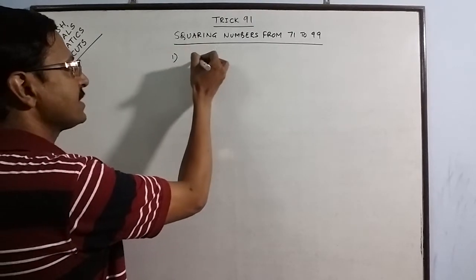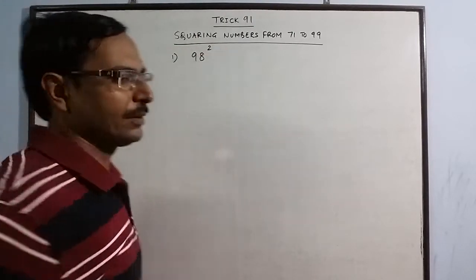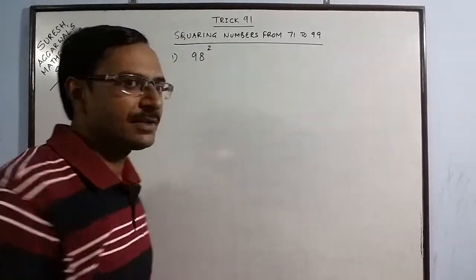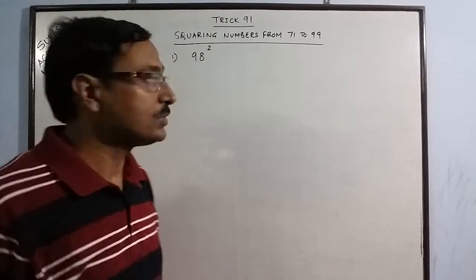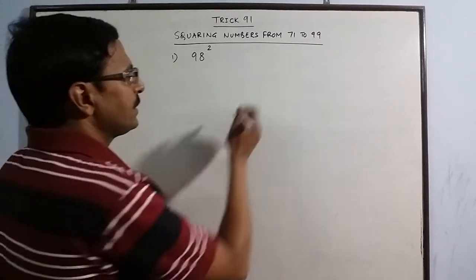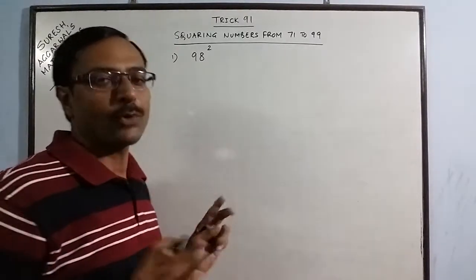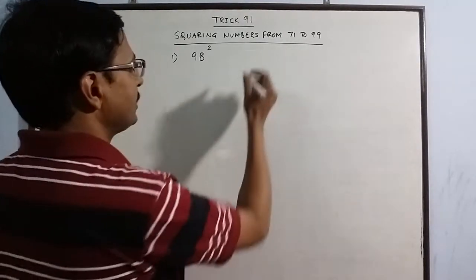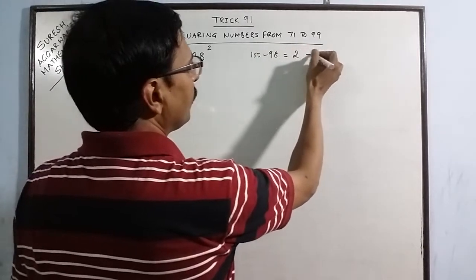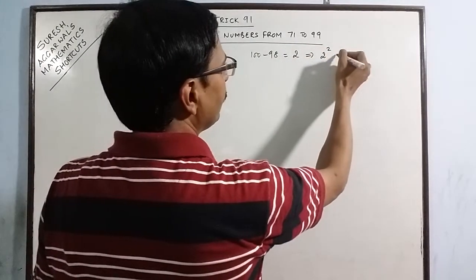Now for the first example I am taking 98 square. So obviously you have many other methods of squaring but this is yet another imaginative and creative method through which you can find a square of 98 in 3 seconds. Now see, first step is to see how far from 100 is 98. So 100 minus 98 gives you 2 and what you do is just square 2. We get 4.